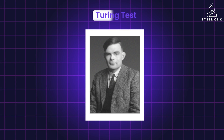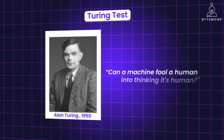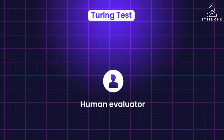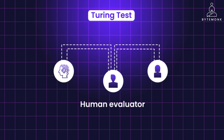The Turing test, proposed by Alan Turing in 1950, was a radical idea that changed the very essence of intelligence. The question of whether machines can think was too meaningless to deserve discussion, but Alan Turing proposed a different question: can a machine fool a human into thinking it's human? In the Turing test, a human evaluator interacts with both a machine and another human through text-based communication. If the evaluator cannot reliably distinguish between them, the machine is said to have passed the test.